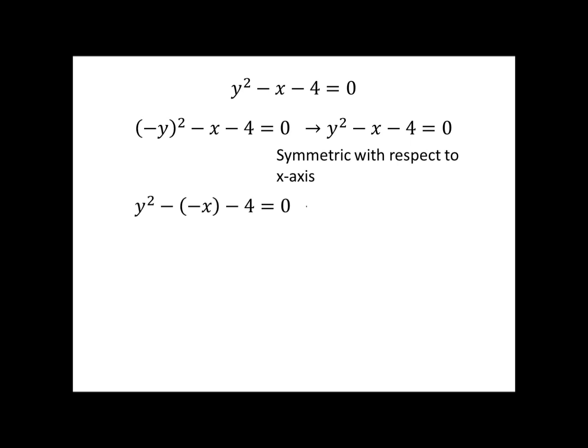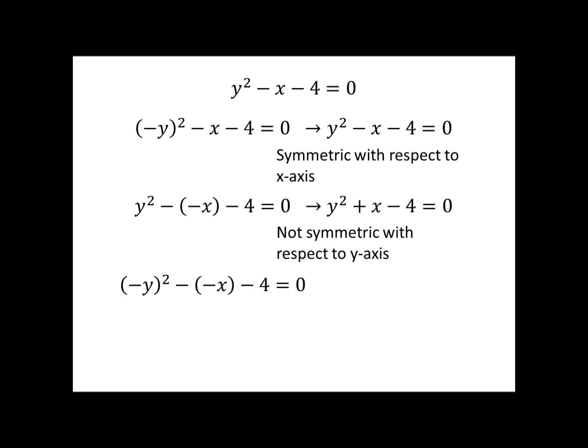Testing the same equation for y-axis symmetry: replacing x with negative x gives y squared plus x minus 4, which is not the original equation, so it is not symmetric with the y-axis. Testing for origin symmetry by replacing both x and y with negatives: the first negative goes away due to squaring, but the second does not, so this equation is not symmetric with respect to the origin.